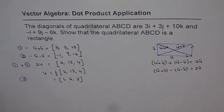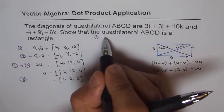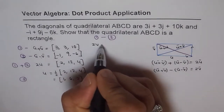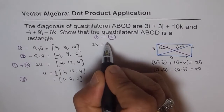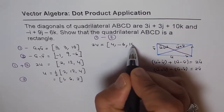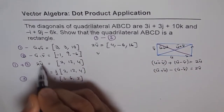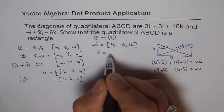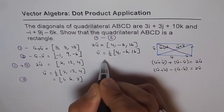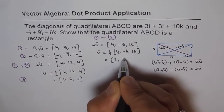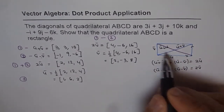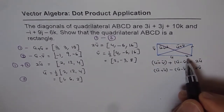Now to find v, we subtract equation 2 from equation 1. That gives us 2v = (4, -6, 16), so v = (2, -3, 8).